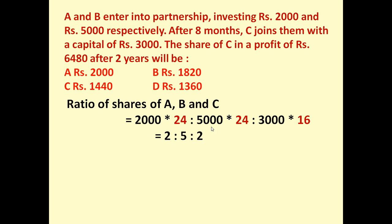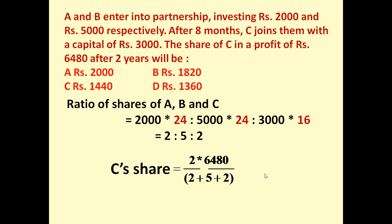We have to determine the profit of C. Out of a total of 2 plus 5 plus 2, that is 9 units of profit, C will be getting 2 units. So the share of C is equal to 2 upon 9 into total profit 6480, which equals 1440. It means C's share in the profit will be rupees 1440.